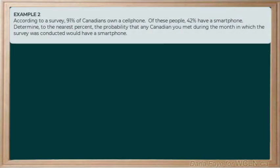Let's try one more. Example two reads, according to a survey, 91% of Canadians own a cell phone. Now, of those people or of those 91% of Canadians who own a cell phone, 42% of them have a smartphone. It says, determine to the nearest percent the probability that any Canadian you met during the month in which the survey was collected would have a smartphone. Now, I don't know about you, but I think that there are many more folks who have smartphones these days, but we'll continue on with the data that's given to us. Let's start by analyzing what we know and what we need to find out and how we're going to tackle solving this problem. We're definitely going to look for keywords. Those are always helpful.